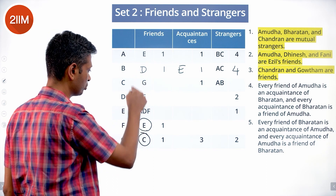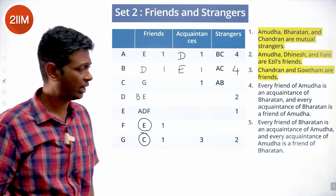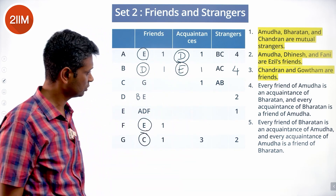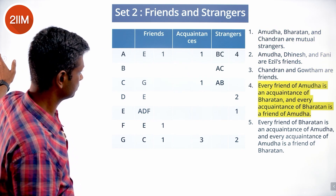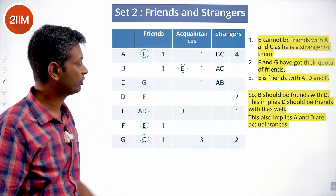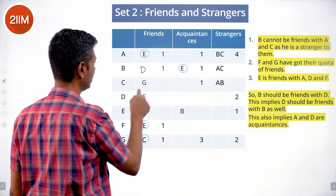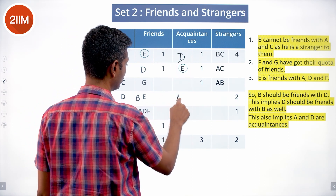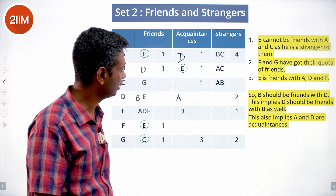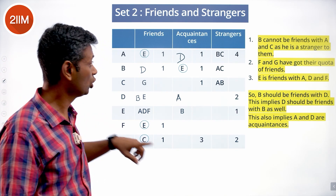Once we put D as Bharatan's friend, we put B in Dinesh's row since the relationship is mutual. So D's entry gets B. This is super helpful — we can knock off several entries. B should be friends with D, so D goes into B's column and B goes into D's column. This helps us build further on the table.